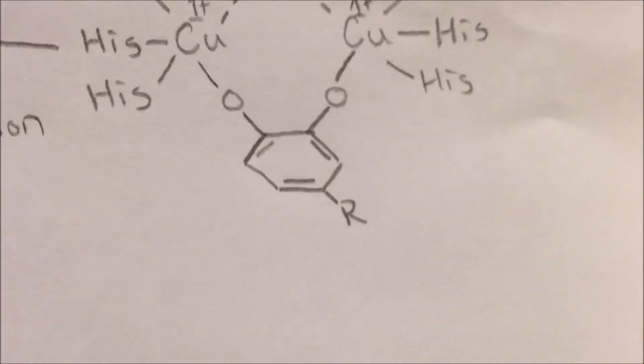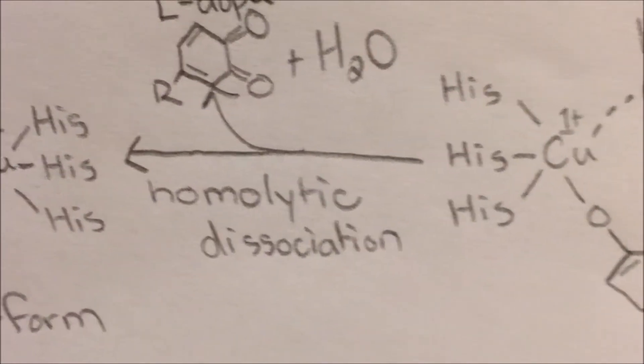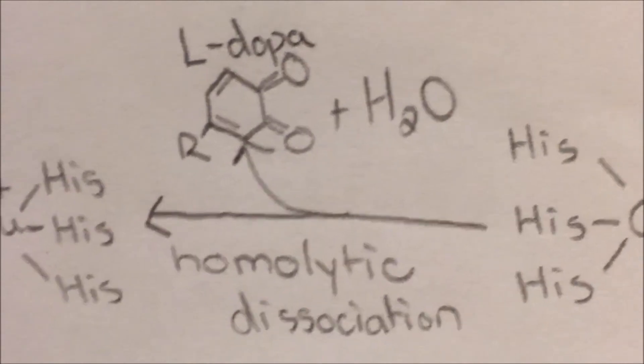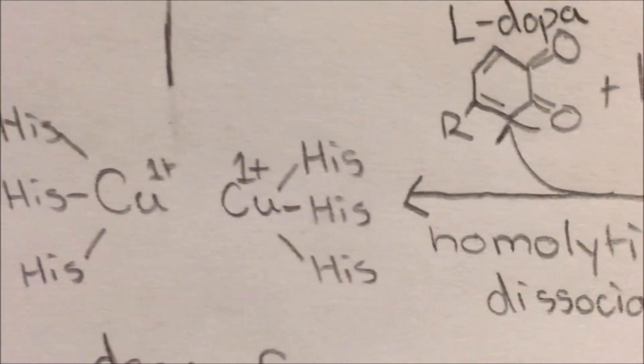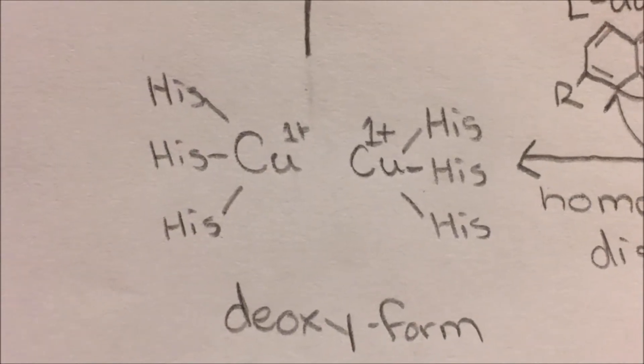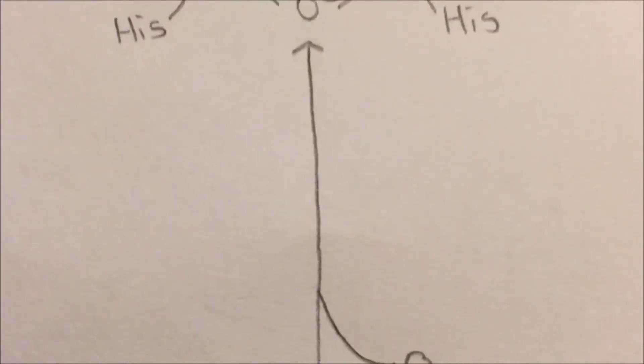This molecule then goes through homolytic dissociation where the L-DOPA molecule is cleaved and released along with a water molecule. Once this has occurred, the deoxy form of the active site is again formed along with the L-DOPA. This can then be reacted with another O2 molecule and the active site is regenerated and the process can begin again.